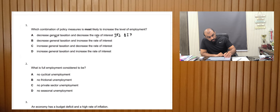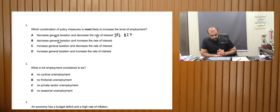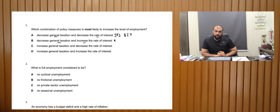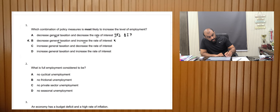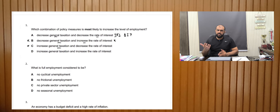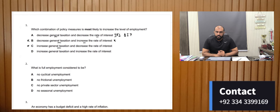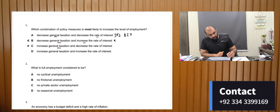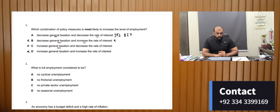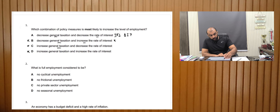Option B has a decrease in general taxation but an increase in the interest rate — if you're increasing the interest rate, businesses won't invest, so this will not increase employment. Increasing general taxation is bad because profits would decrease, businesses would shut down, and employment would fall. So the correct answer is A.